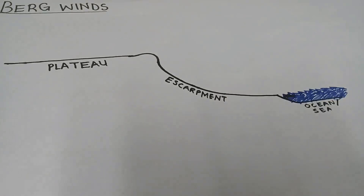So what are these Berg winds? Berg winds are warm, dry winds that are caused by the subsiding air during winter in the interior of South Africa. And when they hit the plateau, they move from west to east direction, down the escarpment.